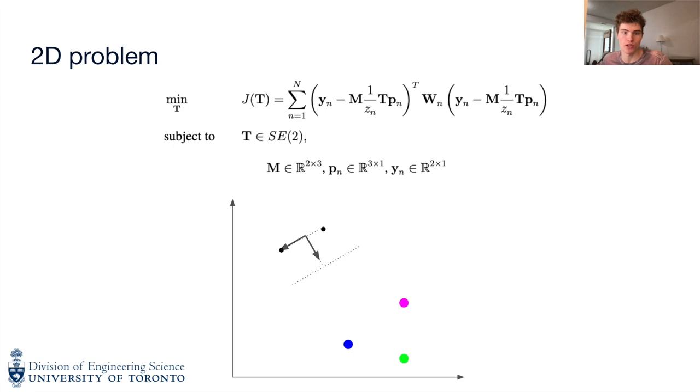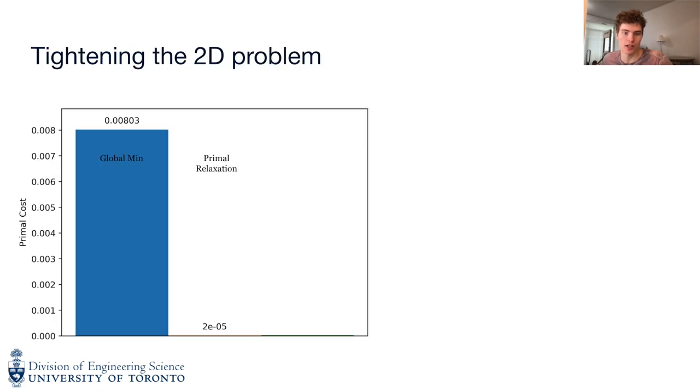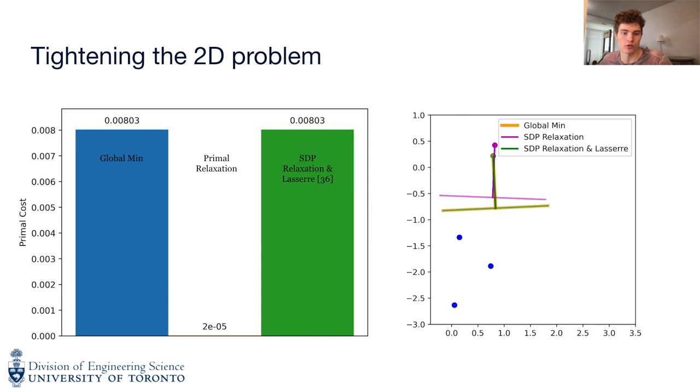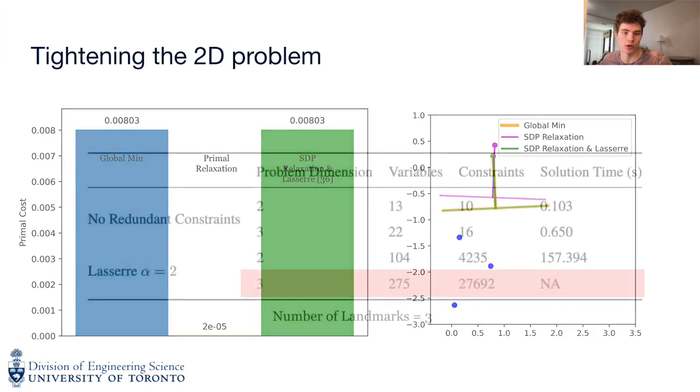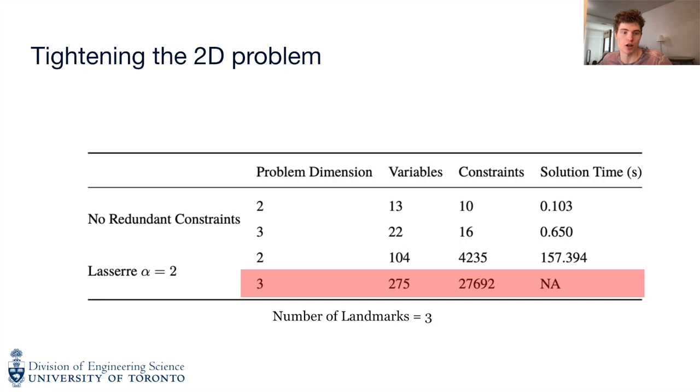Next, we tackled the 2D problem using the stereo reprojection error, with 1D pixel measurements of planar landmarks, and a 2D unknown pose. Again, the primal relaxation was not tight. To tighten this problem, we applied the Lasserre hierarchy. At a given level alpha of the Lasserre hierarchy, new variables are added consisting of products up to the order of alpha of the current variables. It also adds redundant constraints over those variables. For the 2D problem, at alpha equals 2, the problem became tight. Unfortunately, applying Lasserre is not tractable for the 3D problem, because it is very slow. We can only solve 2D problems with at most 4 landmarks in a reasonable amount of time.